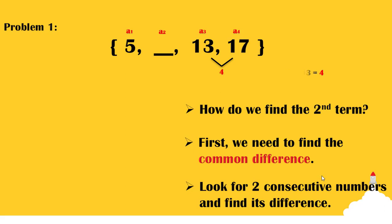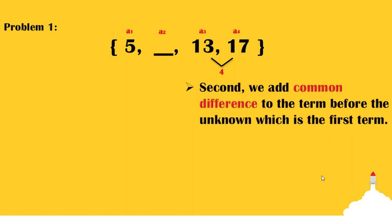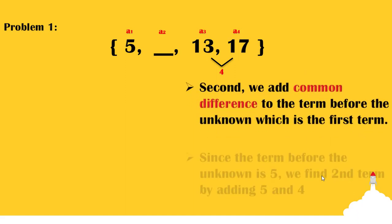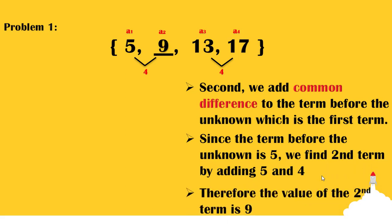Then we add the common difference to the number before the unknown, which is 5. That is, 5 plus 4. Therefore, the second term is 9. Now, if we are going to check the difference between 9 and 13, we will also get the answer 4, which confirms our answer is correct.